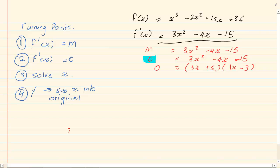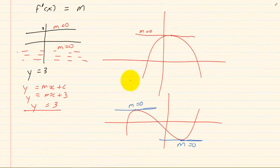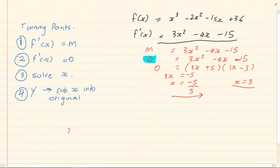So I have 3x plus 5 and x minus 3. That gives me 3x squared minus 15 plus 5x minus 9x. Solving for x: 3x is equal to minus 5, so x is equal to minus 5 over 3. And then x is equal to 3. Now, why do I have two x values? When you are doing a parabola, you had one turning point. But when you do a calculus graph, you have two turning points, which means I have two coordinates.